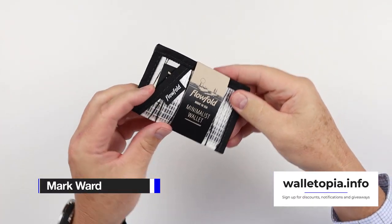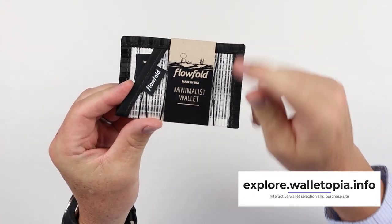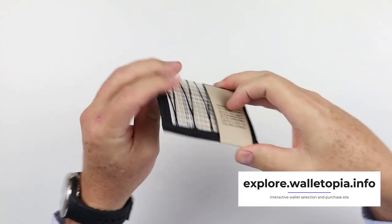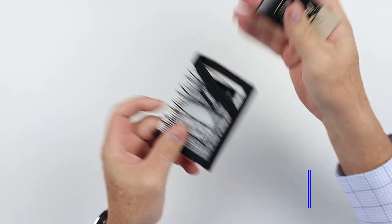Here is the Flo-Fold. This is the minimalist wallet, they call it. You can see that right here. It came in the sleeve. We will take the sleeve off.